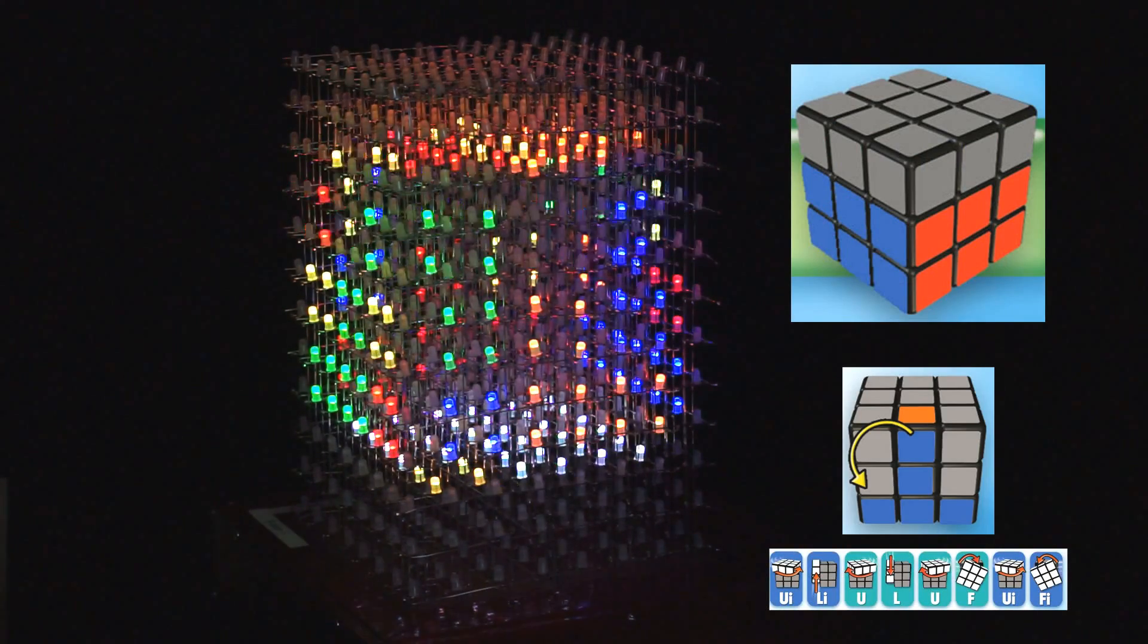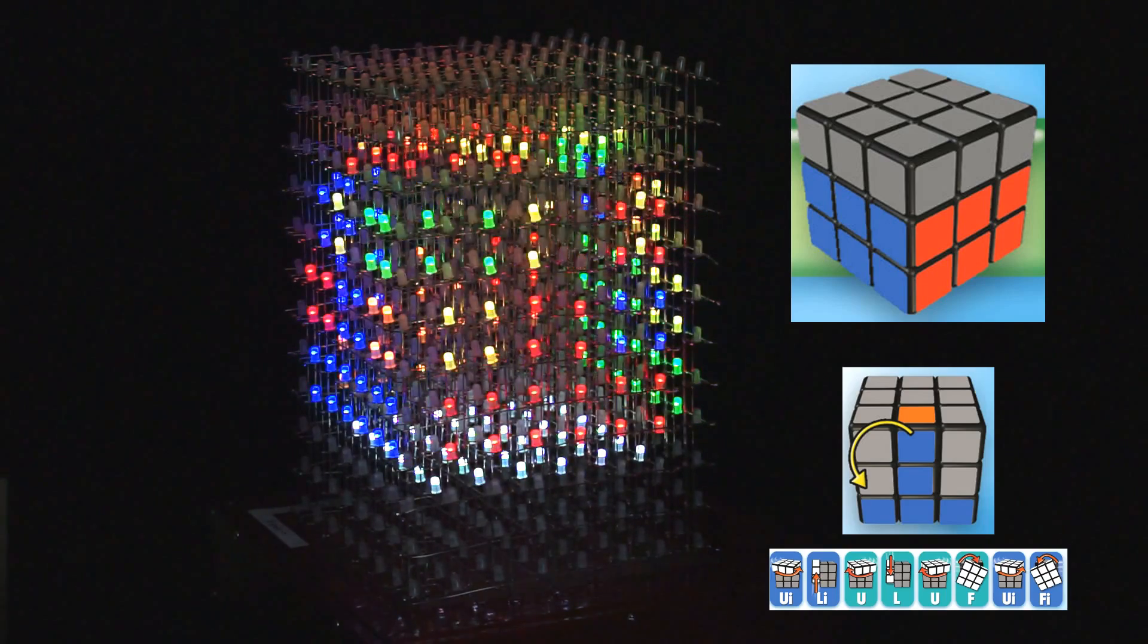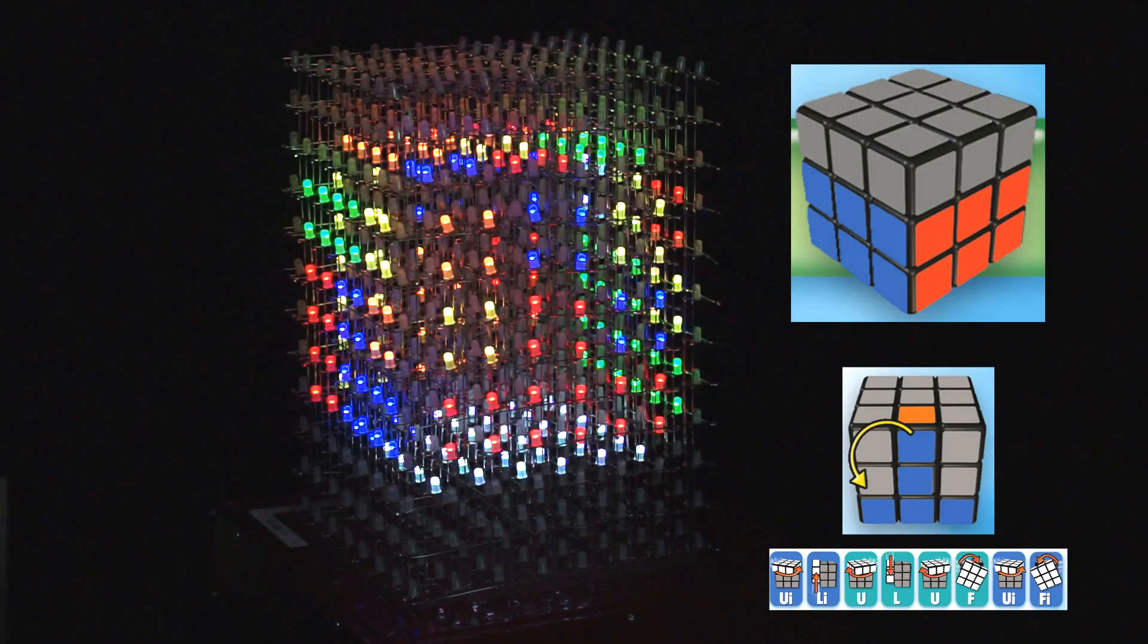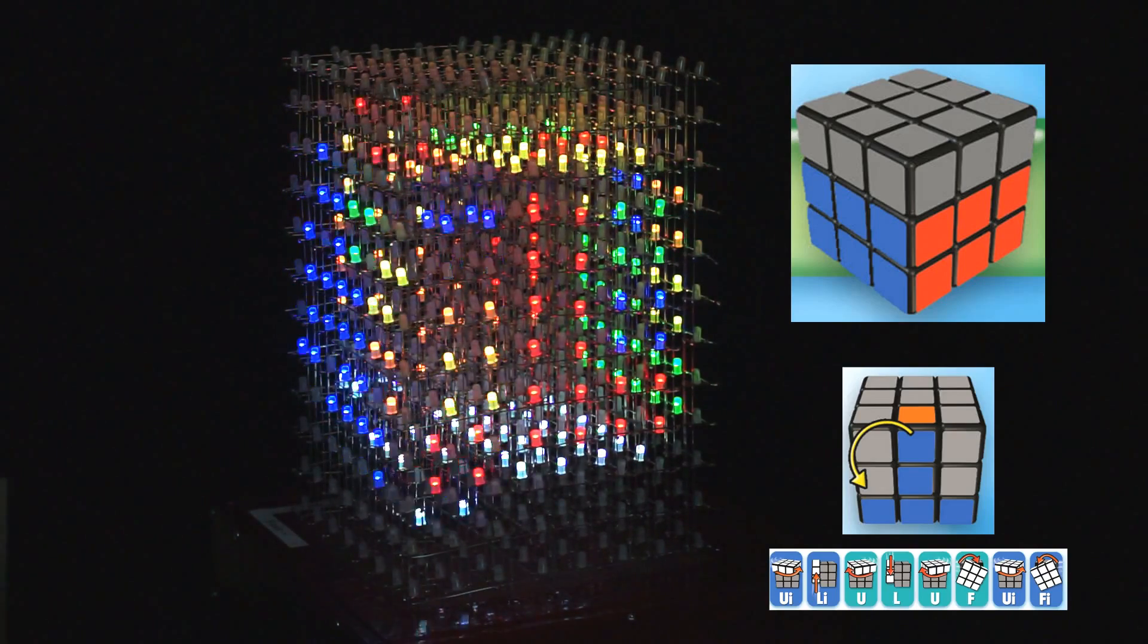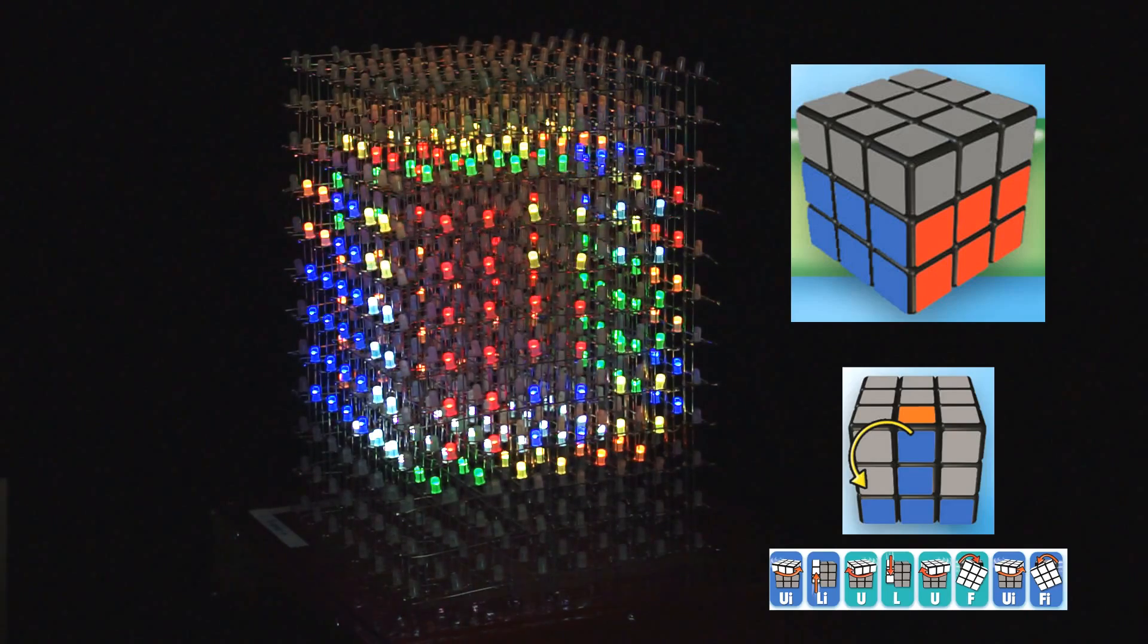Once you've solved the top layer, you'll need to turn the cube over. So now to resolve the middle layer. There are two algorithms for the middle layer. Depending on the arrangement of the edge piece, is if you need to solve the edge piece to the left or solve the edge piece to the right.